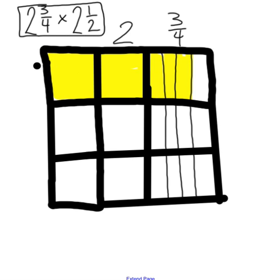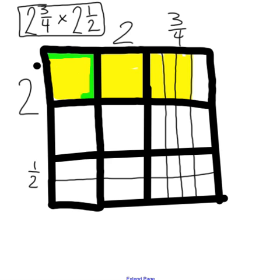In the rows, two and one-half is represented. The last row is separated in half, and two and one-half is highlighted. They share the first box, so that is one whole, two wholes, and one-half of a whole.